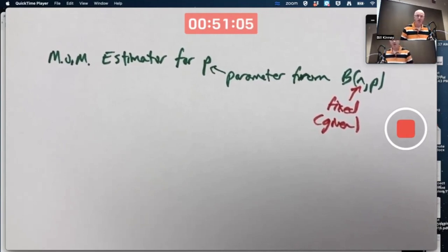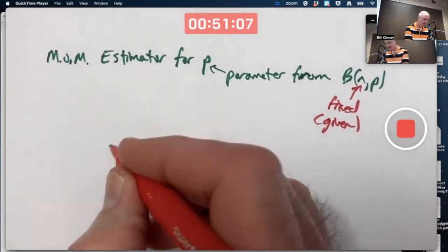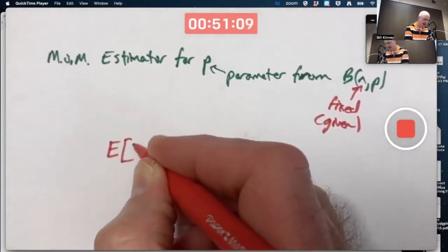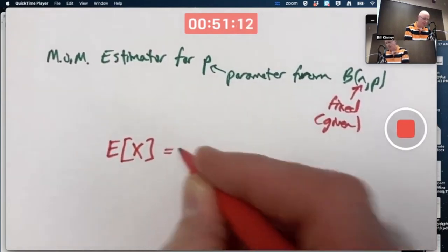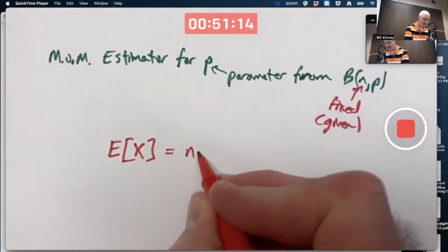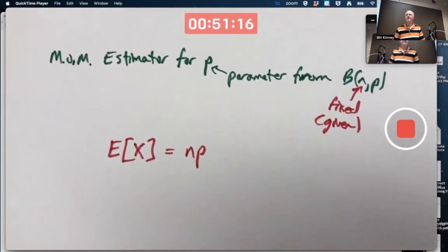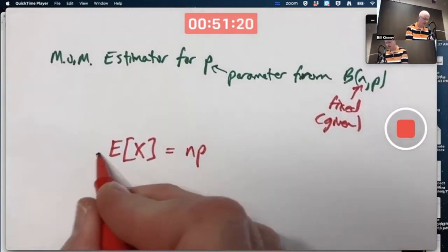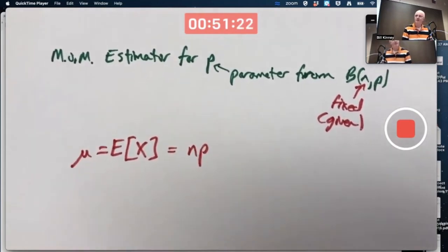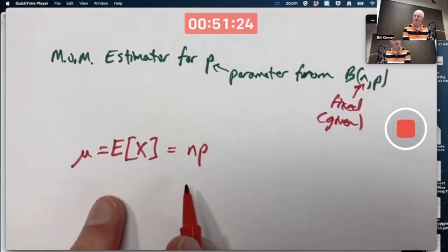We know from chapter 3 that the expected value of a binomial random variable with parameters N and P is N times P. We know that. It's chapter 3. This is μ. This formula only works for binomial random variables. You can't use this formula for other random variables.